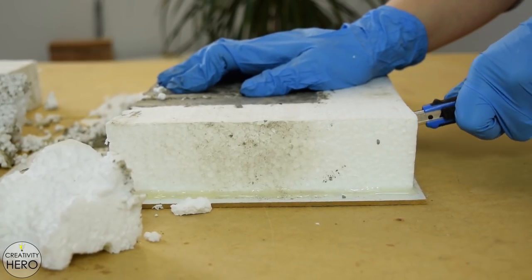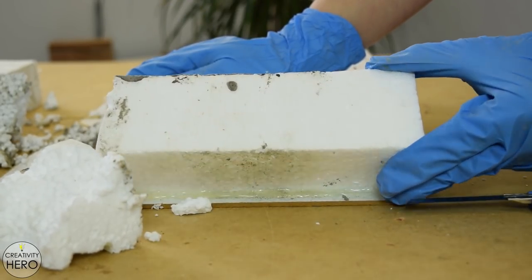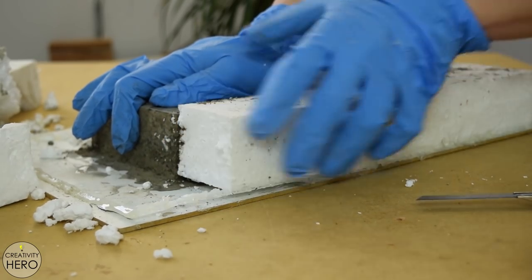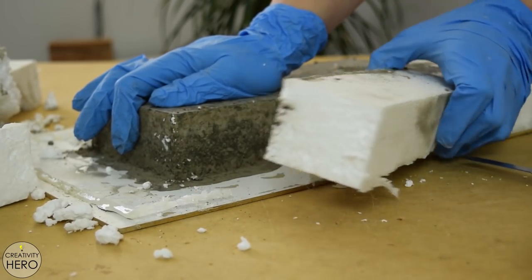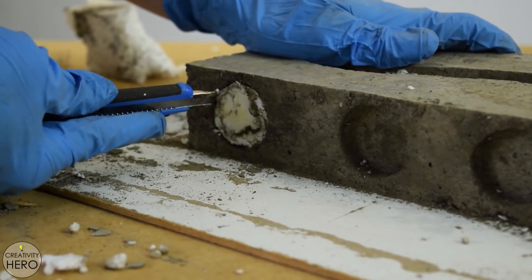Once it has cured I can remove the mold. Using a utility knife makes the process of removing the mold much easier and faster. The cooking oil helped a lot and the styrofoam came off very easy which is awesome.